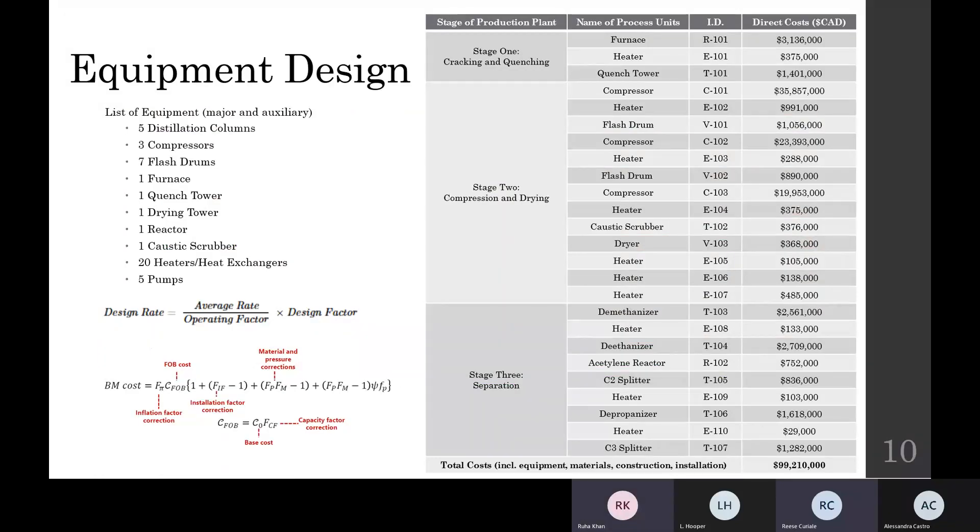Within the proposed ethylene production plant, there are a total of five distillation columns, three compressors, seven flash drums, one furnace, one quench tower, one caustic scrubber, one drying tower, twenty heaters, five pumps, and one reactor.